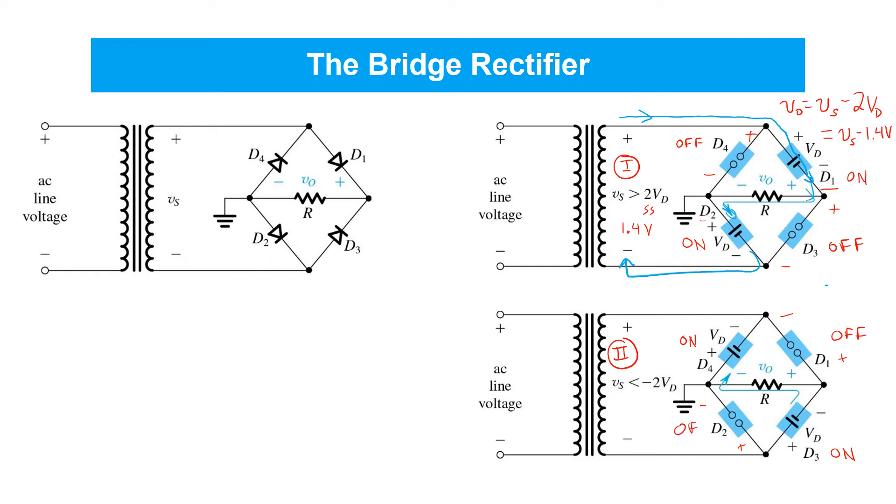The off diodes can be modeled with open circuits. The on diodes modeled with constant voltage drops of about 0.7 volts. And the result in this case is the current flows from positive current flows from the negative terminal of the secondary winding up through D3 through the load resistor R and up through D4 and back to the secondary winding.